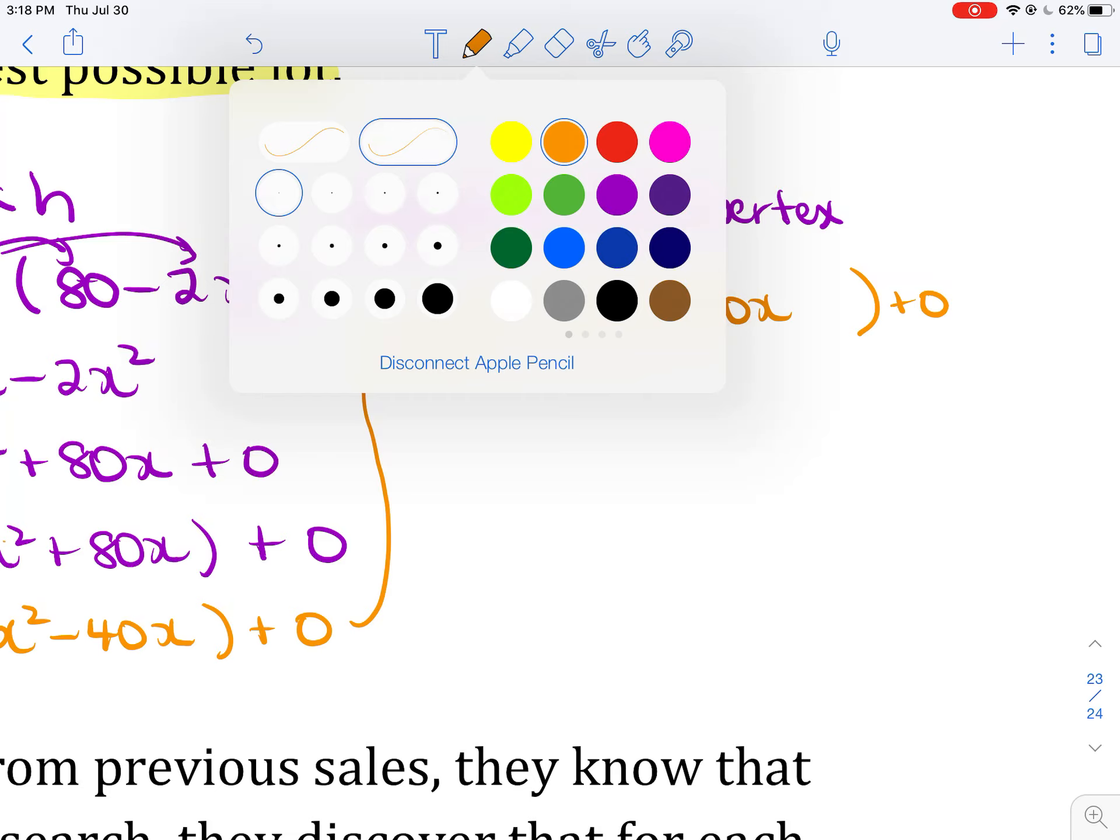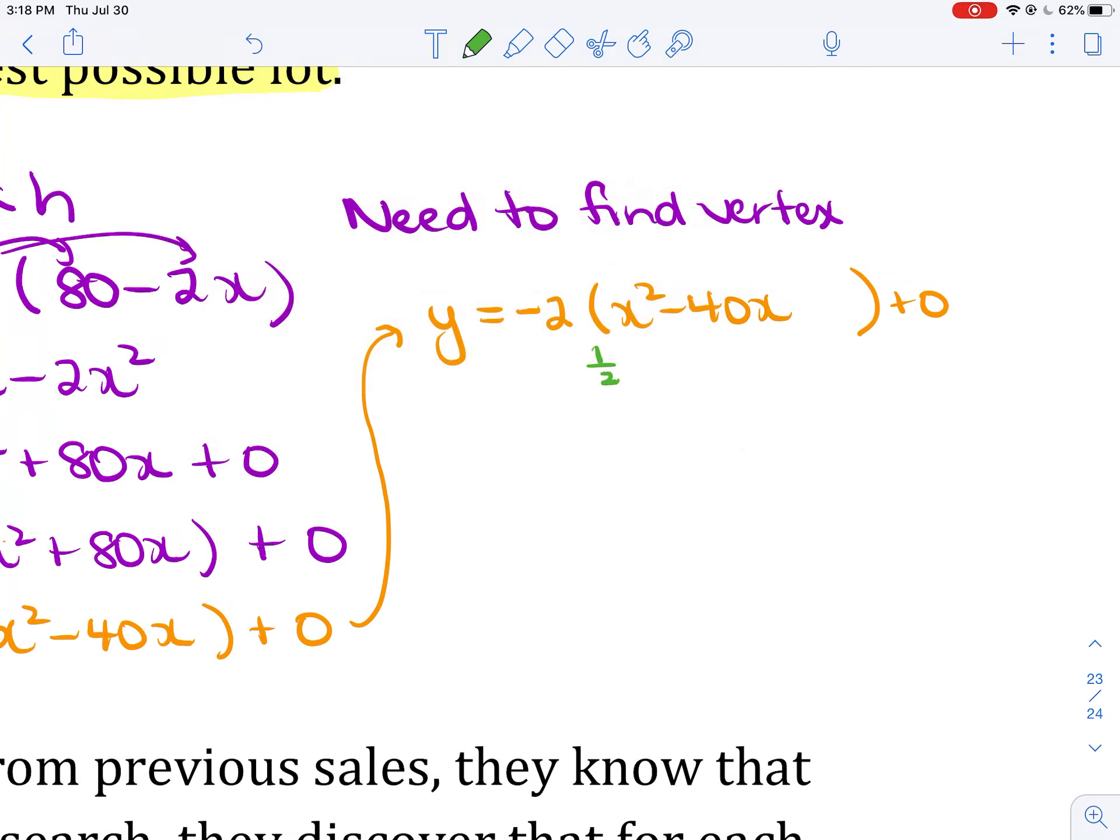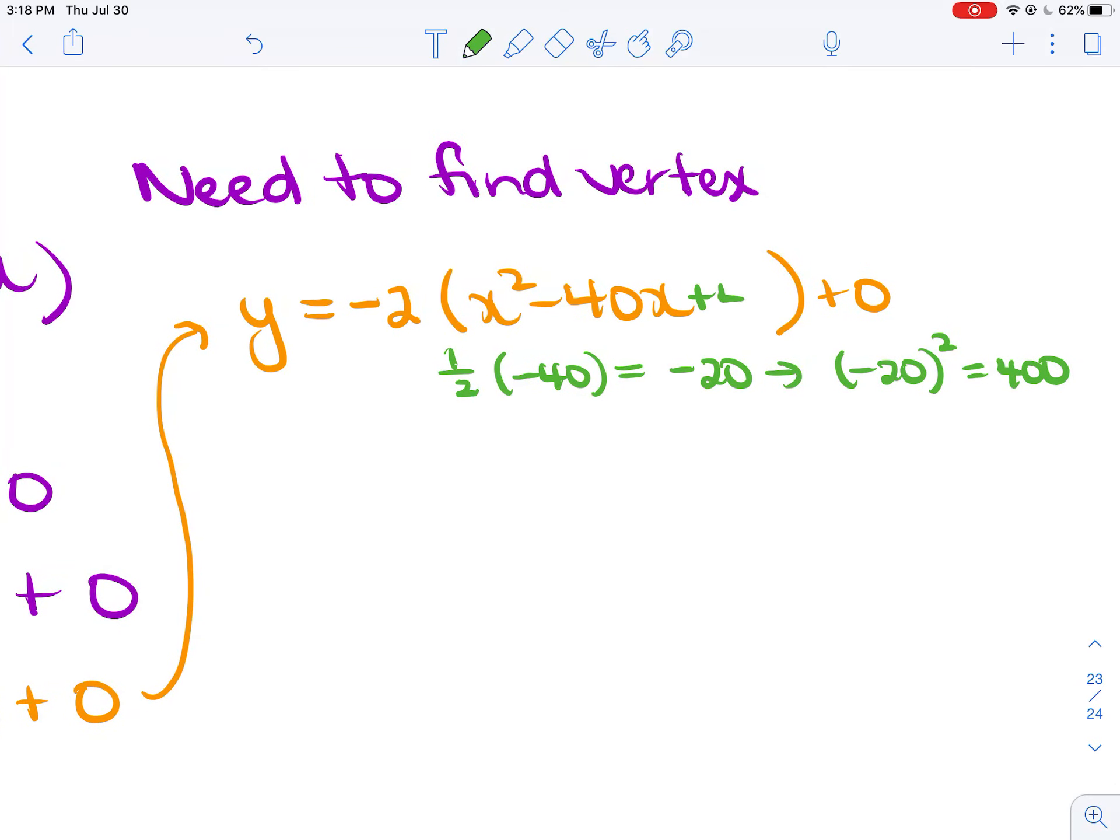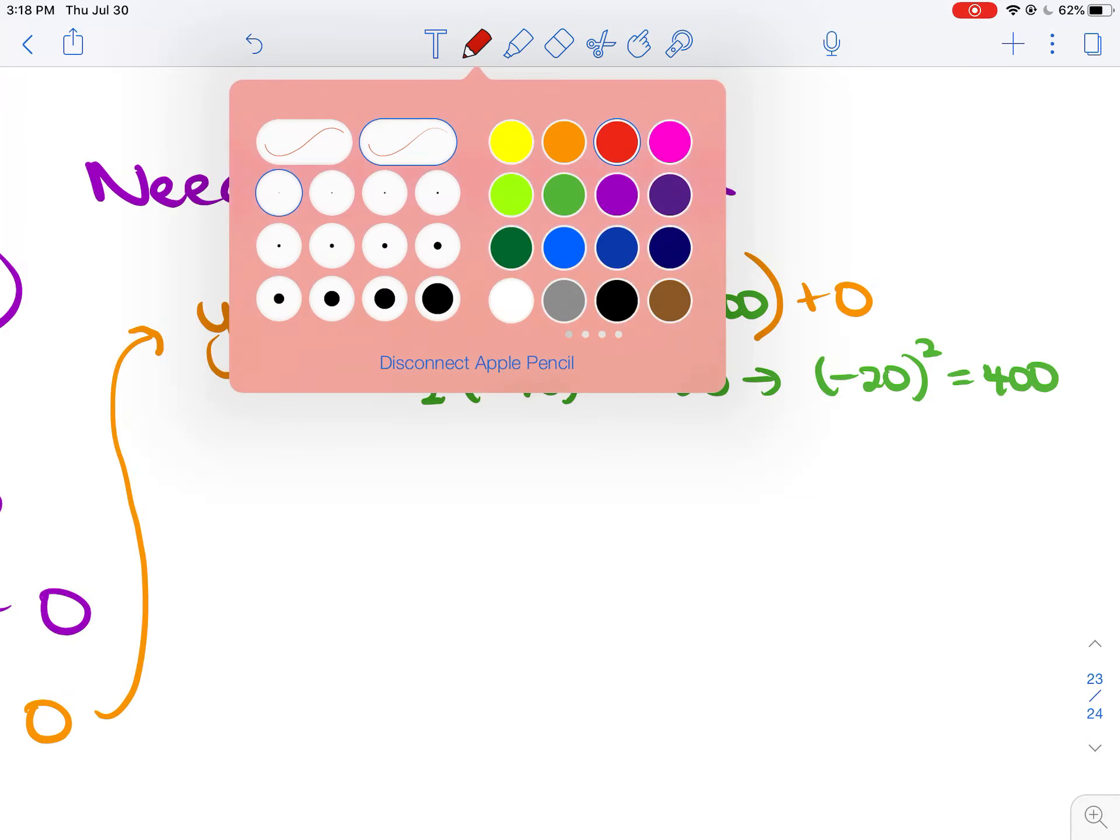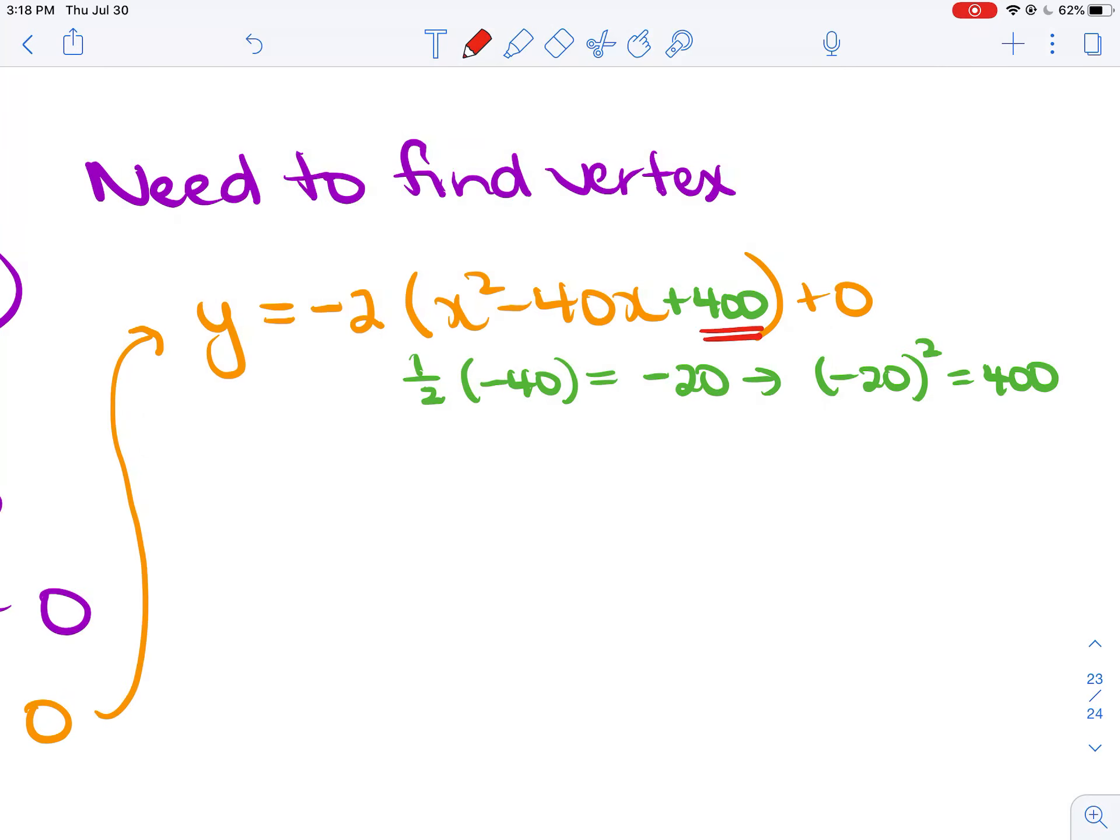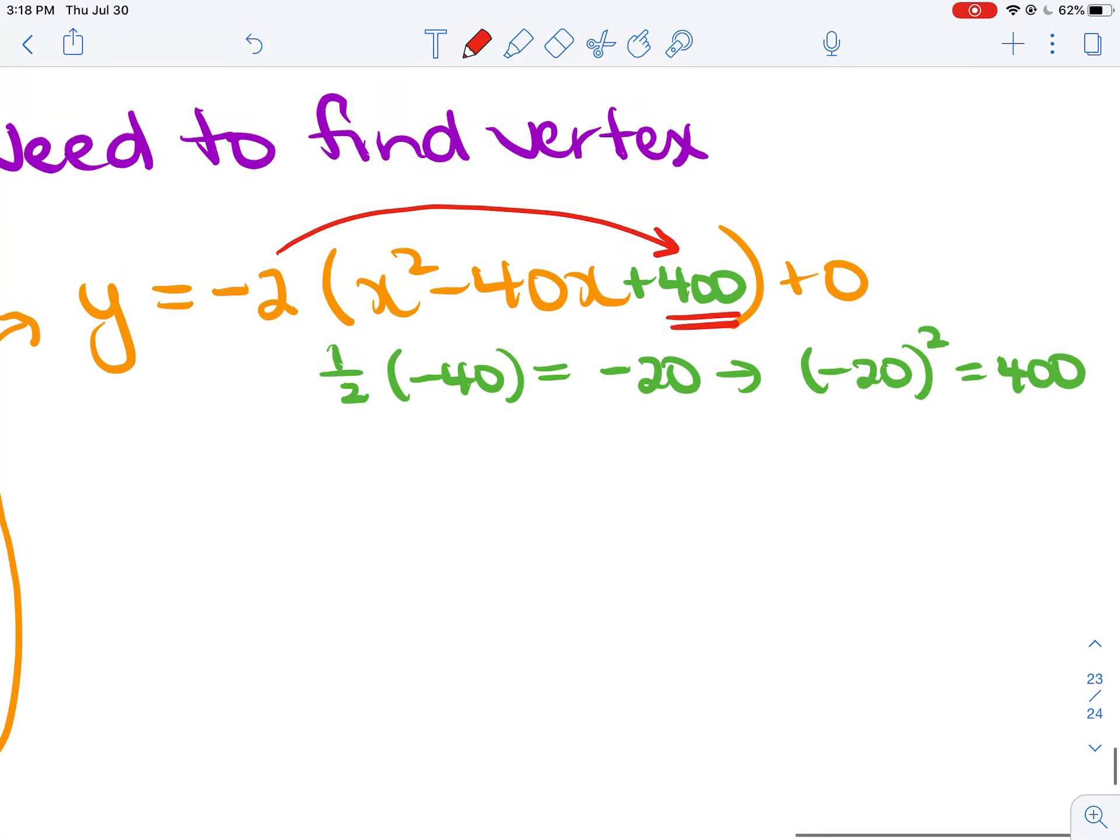So we will have y equals negative 2 times. We've got x squared minus 40x. Leave a space. And then my plus 0 is on the end. Now, what do I need to add in the bracket to make this a perfect square trinomial? I take half of negative 40, which is negative 20. And then I take negative 20 and I square it to be 400. So I need to have a positive 400 in that bracket. But be so very careful. You did not add 400 there. Negative 2 times 400. Negative 2 times 400 is negative 800. You added negative 800. The opposite is to add a positive 800.